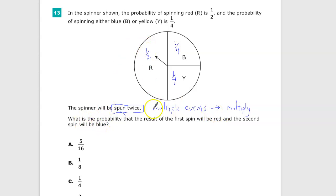So the first spin being red is 1/2. They told us that specifically. The second spin will be blue. Multiple events indicates multiply - 1/4. So you do 1 times 1 is 1, 2 times 4 is 8, and you get a final answer for this question of B, which is 1/8.